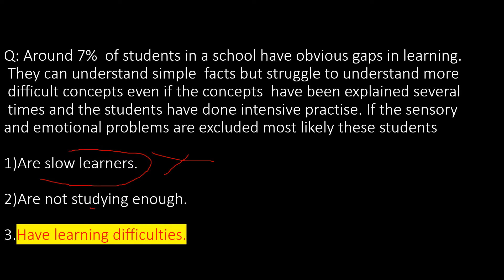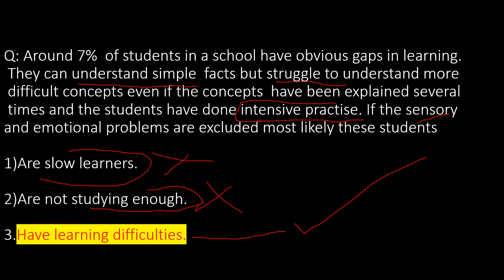Looking at the question: around 7% of students have obvious gaps in learning, meaning learning is not happening — the gaps persist. So slow learning is not the case, and you can remove that option. 'Are not studying enough' — the gaps are there but they are trying to study, so this distractor can also be removed. They can understand simple facts — learning is happening — but they struggle to understand more difficult concepts even after several explanations and intensive practice. So the answer is learning difficulties.